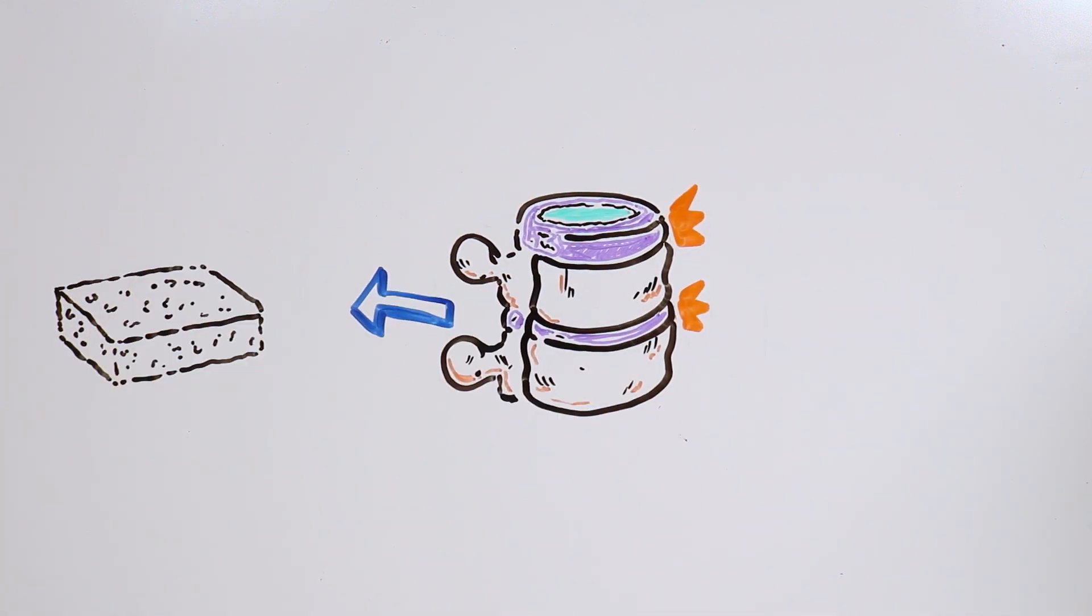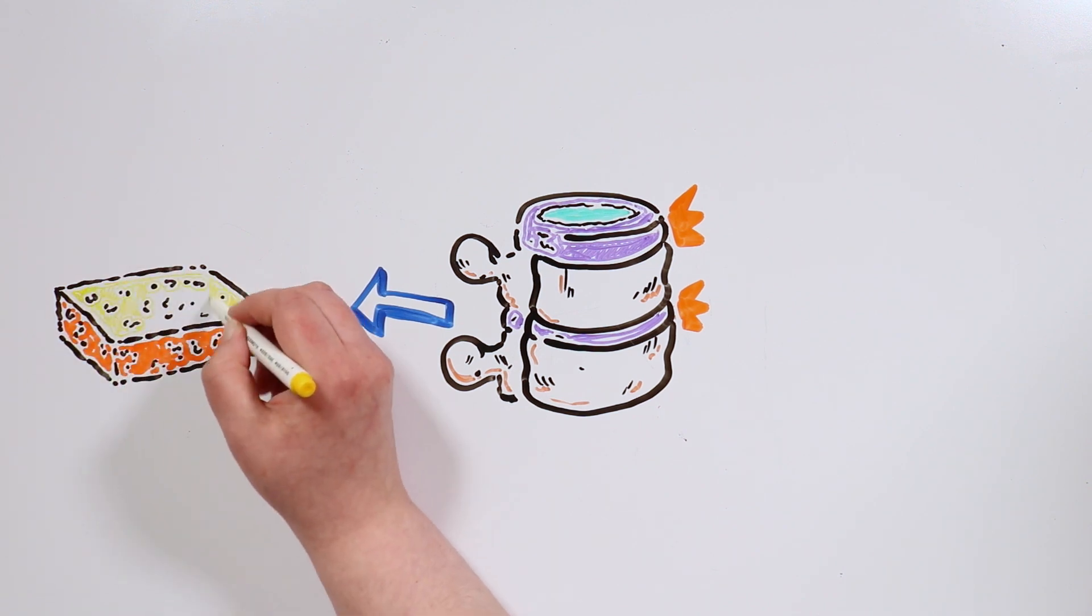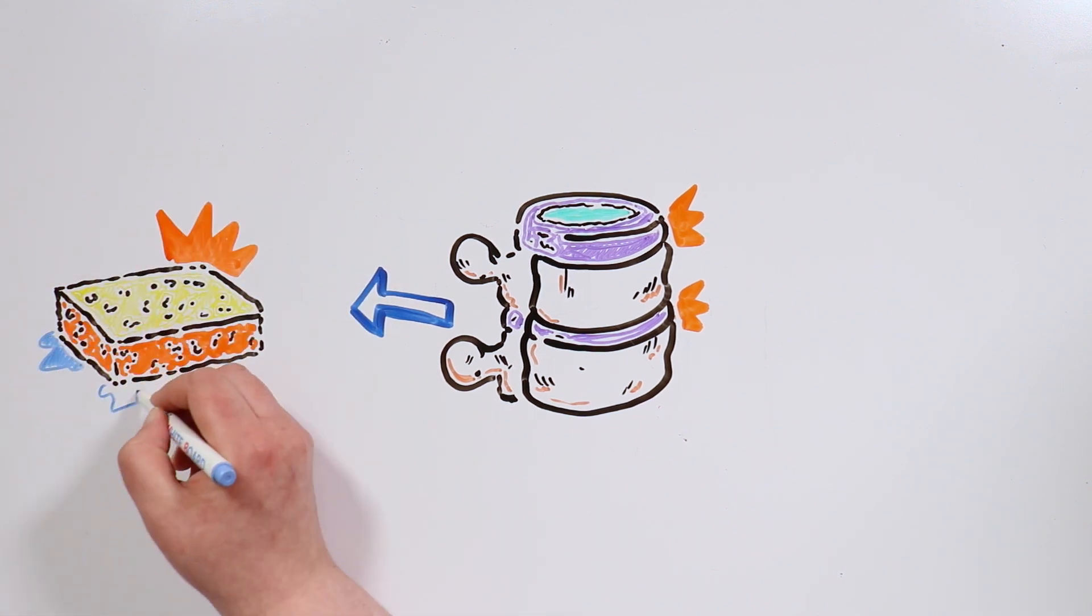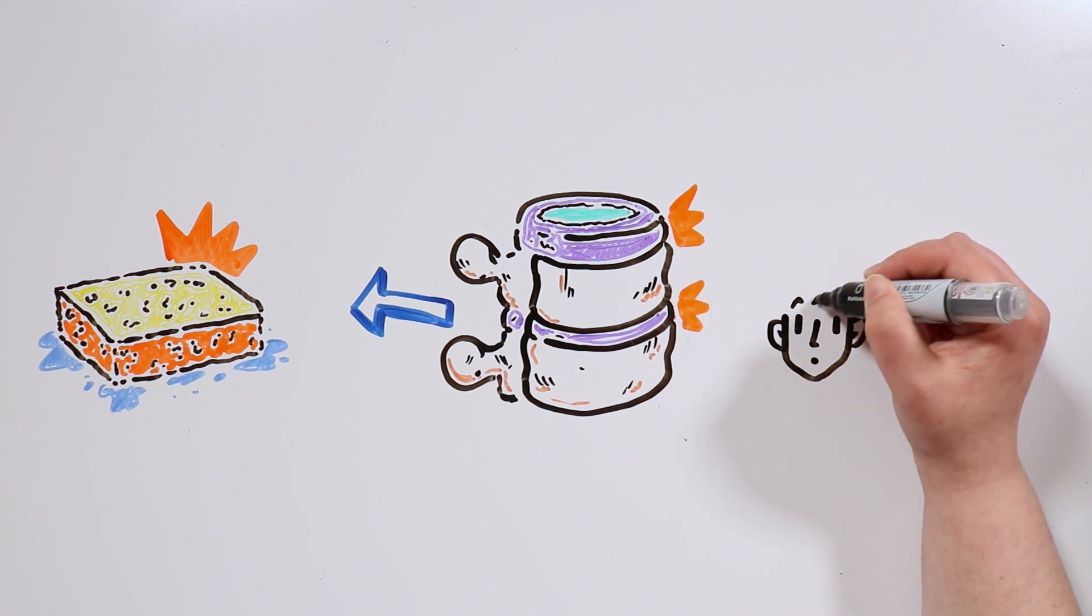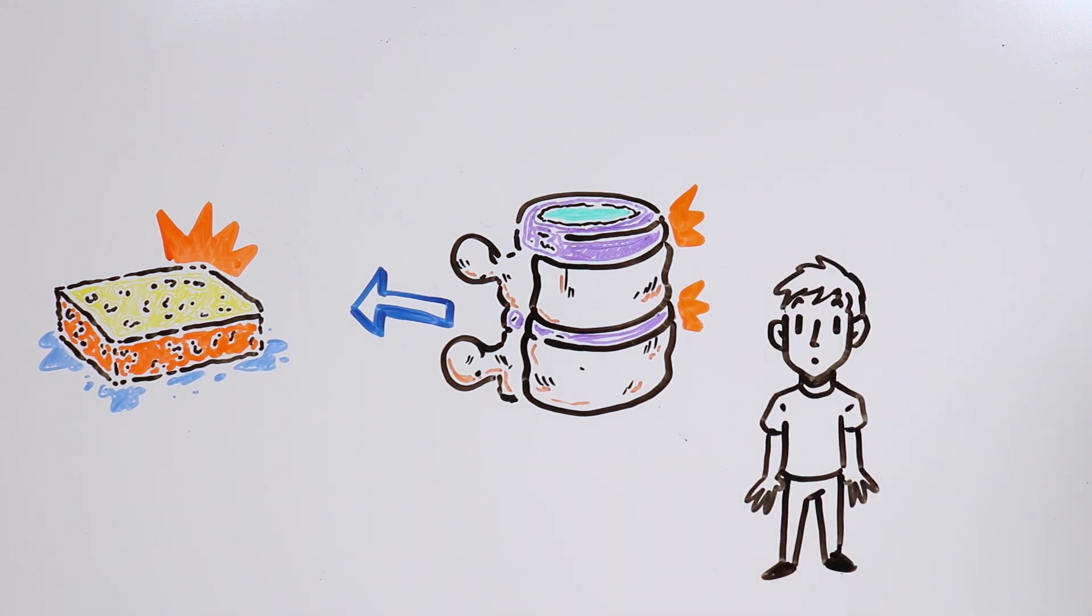In summary, the spinal discs support our body weight and then get compressed just like a sponge would, losing liquid. And because of that, we could be 1 or 2 cm higher in the morning than at night, also depending on the weight of the person.